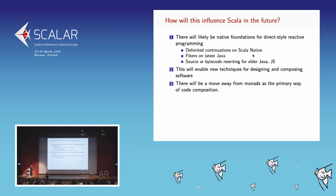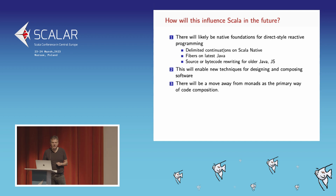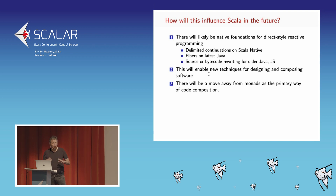How will this influence Scala in the future? There will likely be native foundations for direct style — ideally delimited continuations, which we're currently working on in Scala Native. One can also make do with fibers or virtual threads like on the latest Java. We're working with Xebia Functional on bytecode and source rewriting, and with VirtusLab on delimited continuations for Scala Native. The thesis is this will enable new techniques for designing and composing software, and there will generally be a move away from monads as the primary way of code composition.